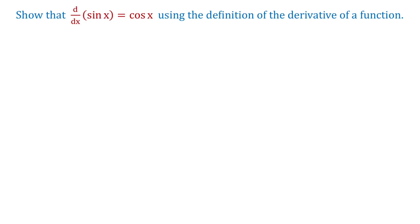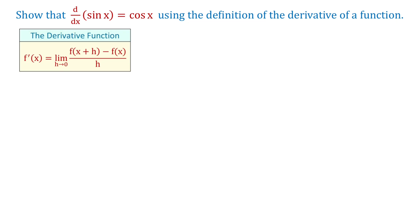Hello. The derivative of sine of x equals cosine of x, and in this video we will prove it using the definition of the derivative of a function. The definition of the derivative tells us that f prime of x equals the limit of f of x plus h minus f of x over h as h approaches 0.